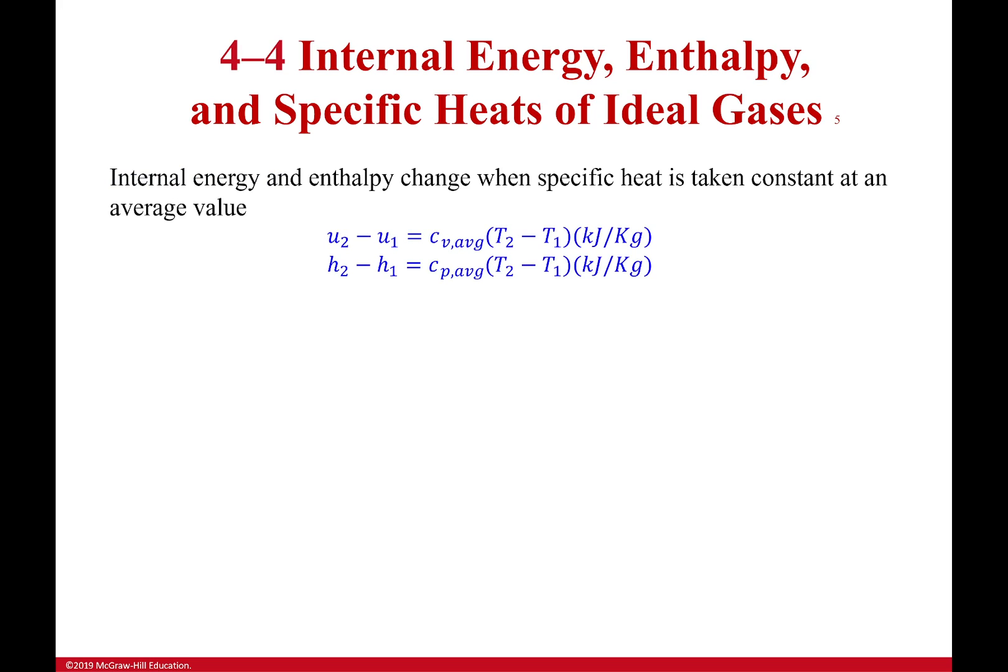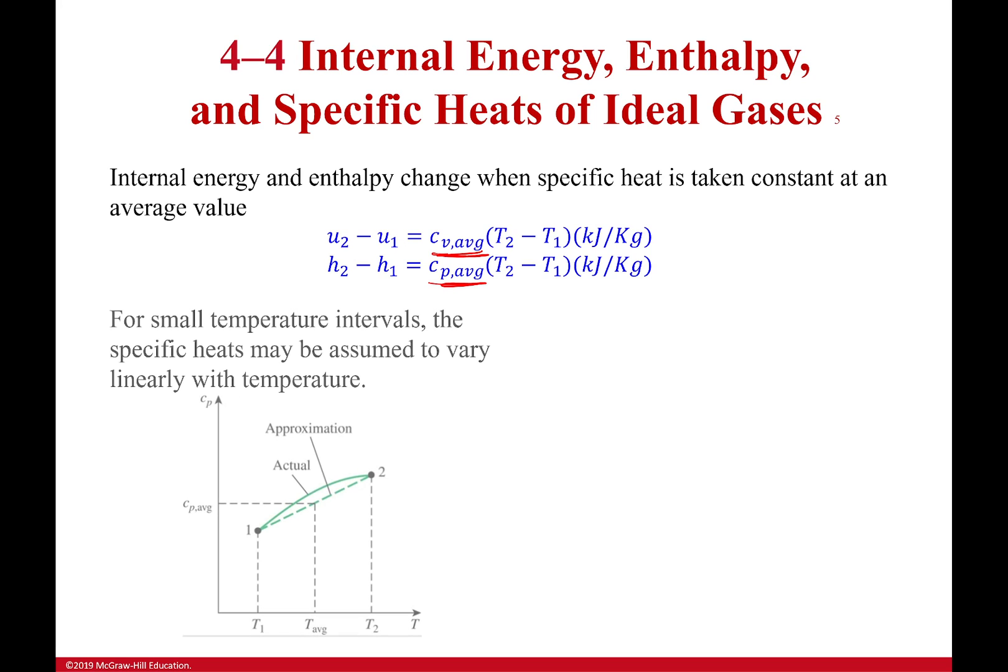So when it doesn't change the temperature, we're typically using what's an average specific heat. Now, I won't put average and give it to you in problem statements, but just know that it actually is the average. And it's not perfectly accurate because if we look to the real specific heat as it goes from one temperature to another, it might bow like this a little bit or bow like this a little bit. So when we're taking an average, we're saying, between these two temperatures, it is roughly this.